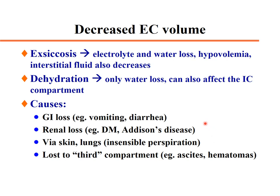Let's discuss the most common clinical situations, starting with decreased extracellular volume. There are two possibilities: exsiccosis and dehydration. Exsiccosis occurs when both electrolytes and water are lost together, developing hypovolemia and decreased interstitial fluid — so the entire extracellular space is involved.